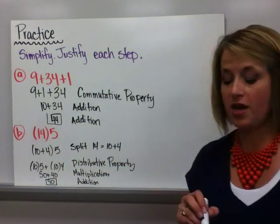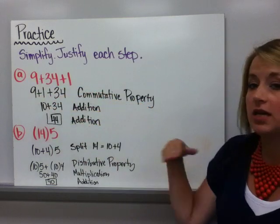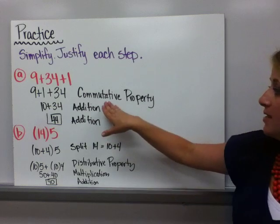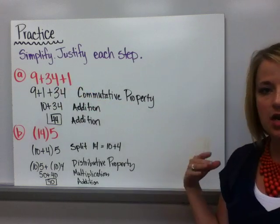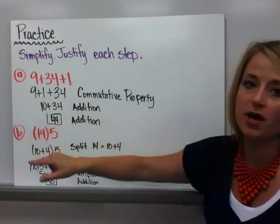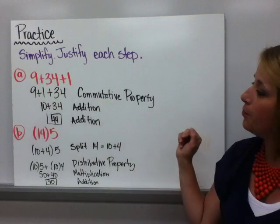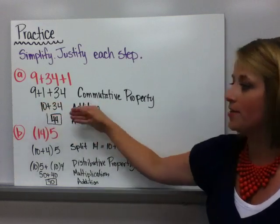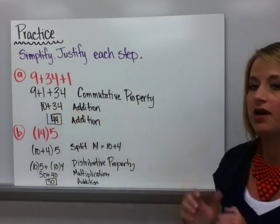Compare what you came up with. For practice problem A, I reordered it and think order doesn't matter because of the commutative property. 9 plus 34, I'm having to carry numbers, which can sometimes be hard on the brain. So I paired the 9 and the 1 because they are more compatible. That's an okay move because of the commutative property. Then I added 9 plus 1, so the explanation is just addition. And then I added 10 plus 34 and got 44.